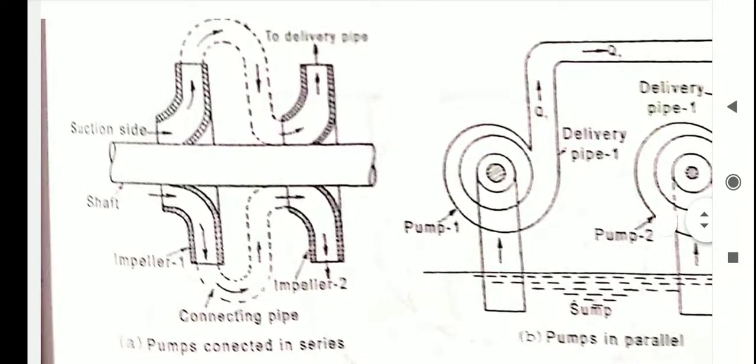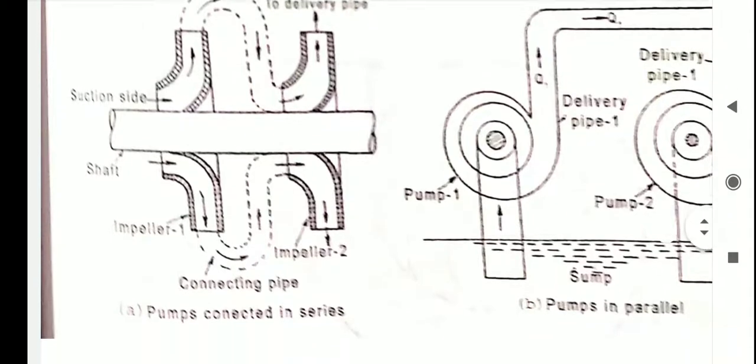The flow is the same in both impellers. The head produced by the combined impeller will be higher. If n is the number of identical impellers and each produces a head of hm, then the total head developed hd is given by n into hm.